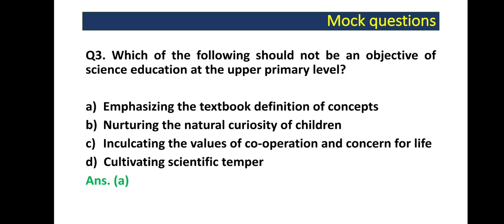Next question: Which of the following should not be an objective of science education at upper primary level? Options hain: emphasizing the textbook definition of concepts, nourishing the natural curiosity of children, inculcating the values of cooperation and concern for life, cultivating sensitive temper. Iska correct answer hai Option A — emphasizing the textbook definition of concepts, jo science education ka objective nahi hai at upper primary level.